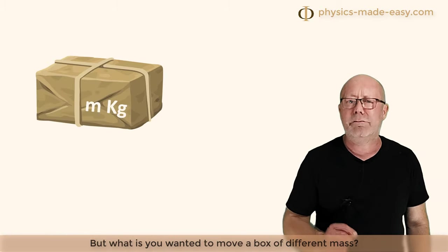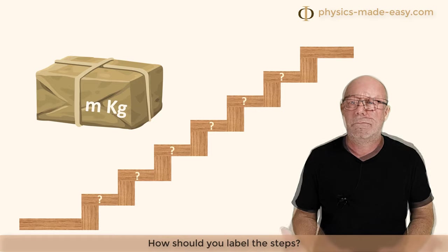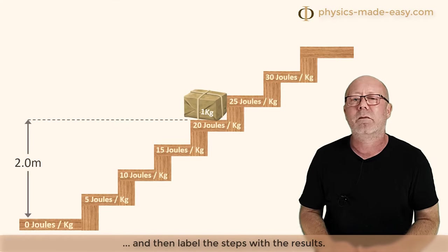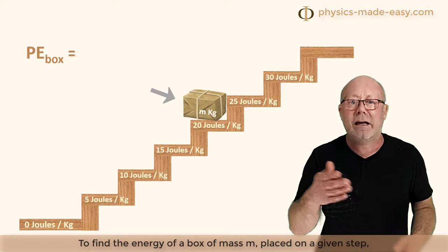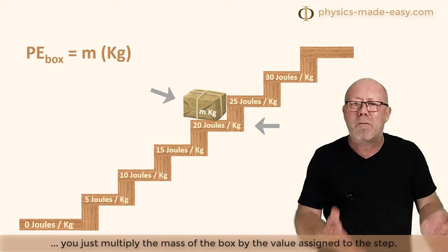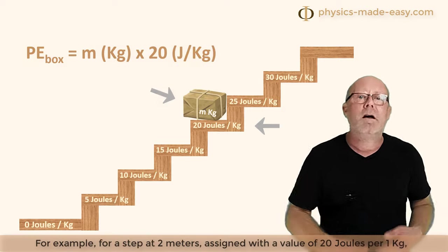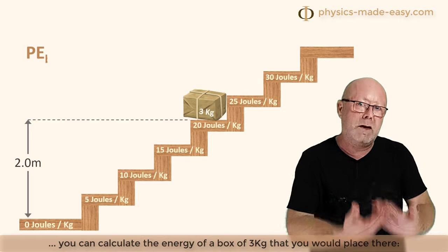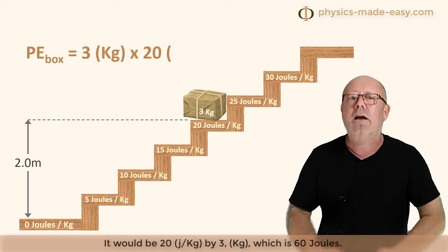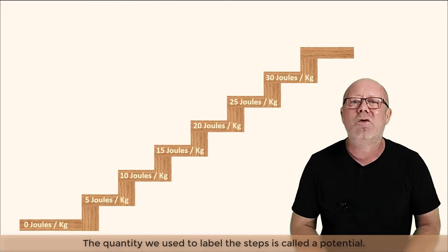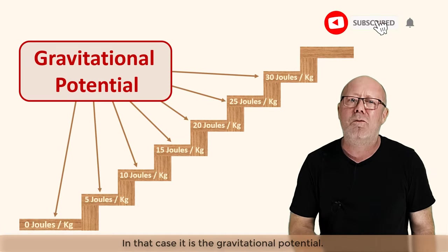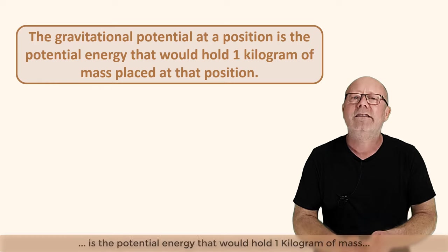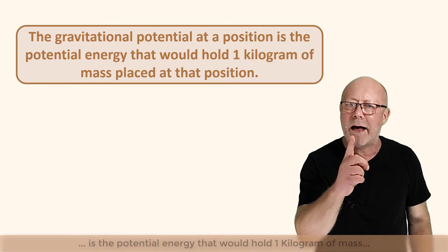But what if you wanted to move a box of different mass? How should you label the steps? Just consider a box of 1kg when you do the calculations for the potential energy for each step, and then label the steps with the result. To find the energy of a box of mass m placed on a given step, you just multiply the mass of the box by the value assigned to the step. For example, for a step at 2 meters — assigned a value of 20 joules per kilogram — the energy of a 3kg box placed there would be 20×3 = 60 joules. The quantity we use to label the steps is called a potential — in this case, the gravitational potential — and it is expressed in joules per kilogram.